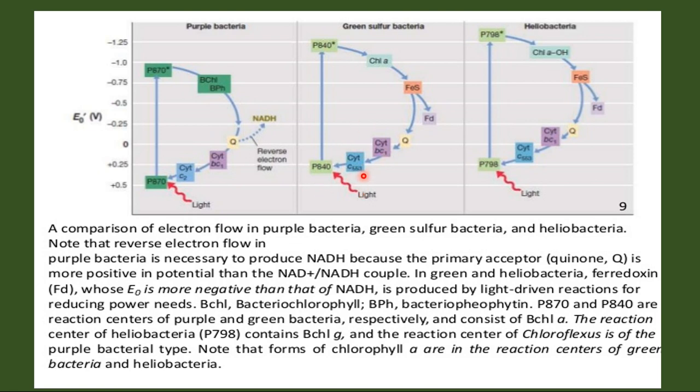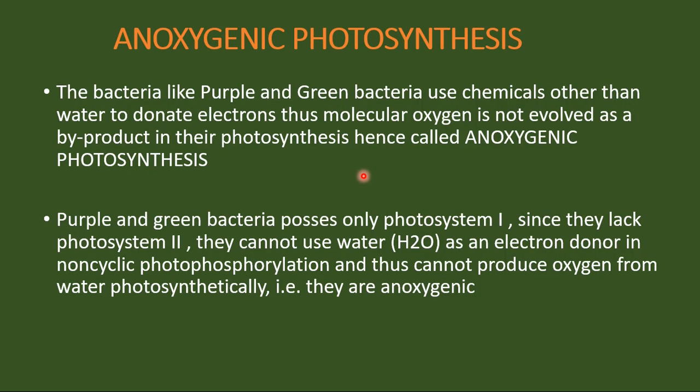So this is all about anoxygenic photosynthesis in bacterial photosynthesis. In the previous part we covered oxygenic photosynthesis where oxygen evolves. In this part we covered anoxygenic photosynthesis in detail, taking examples of purple and green bacteria. In the next part we will discuss the fixation of carbon dioxide — the second phase of photosynthesis, called the dark phase or dark reaction.